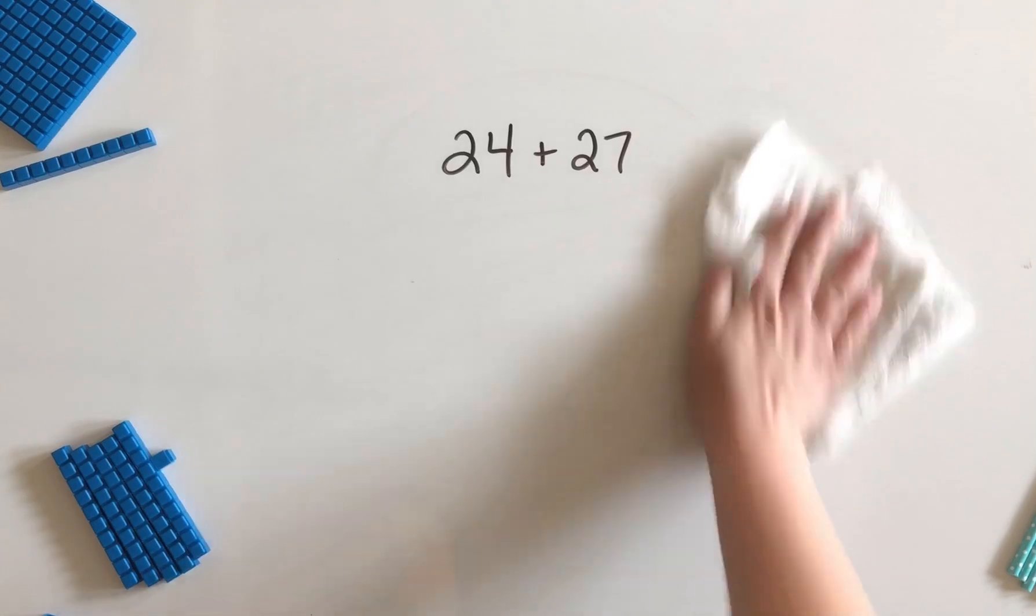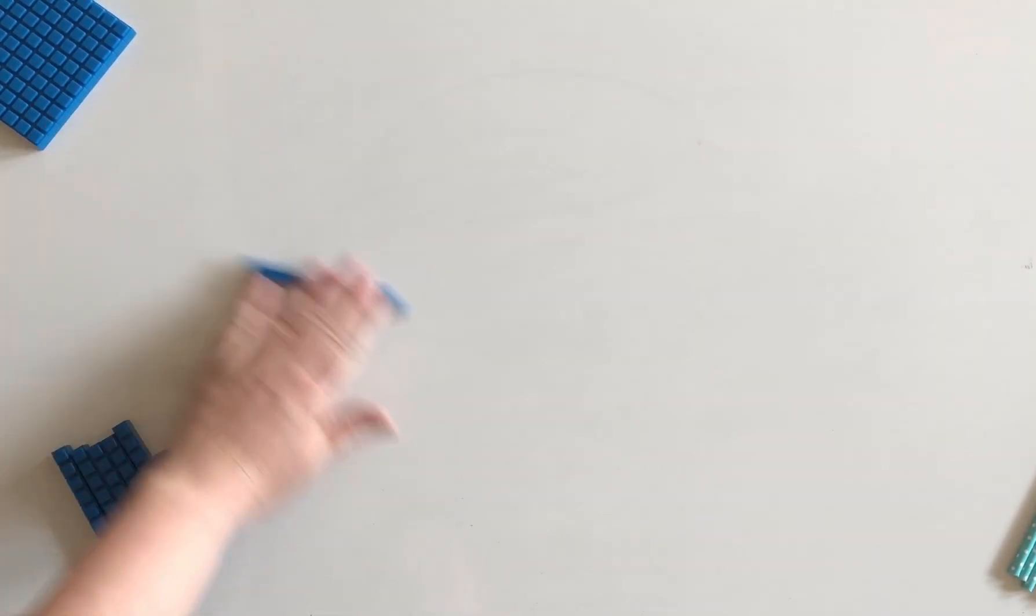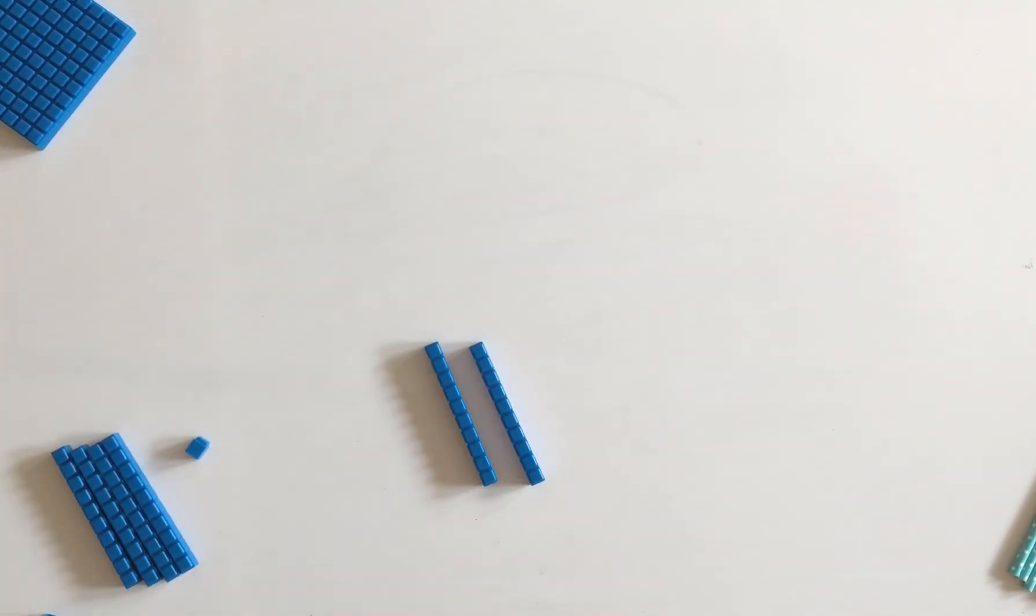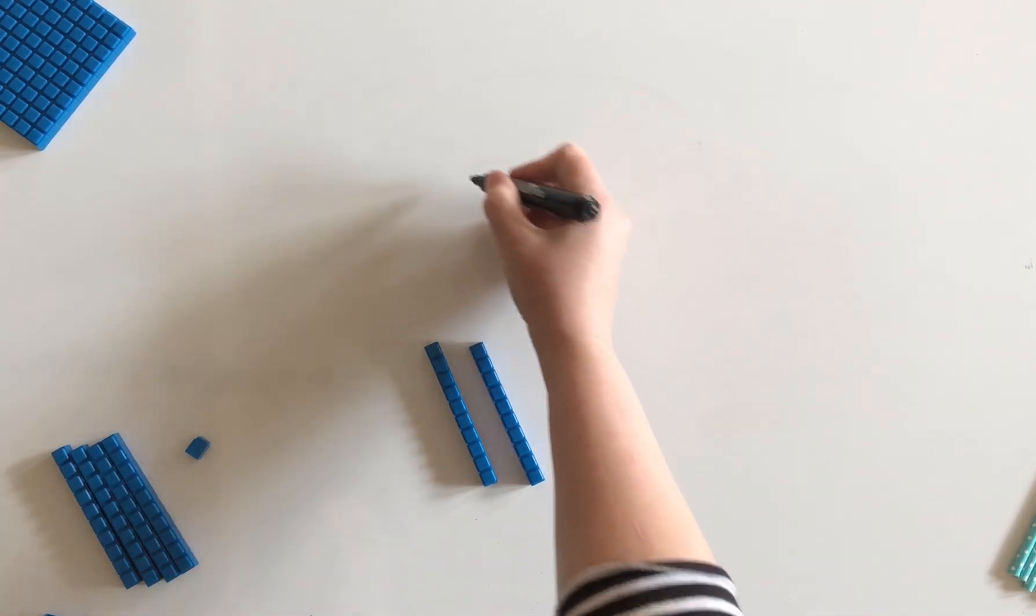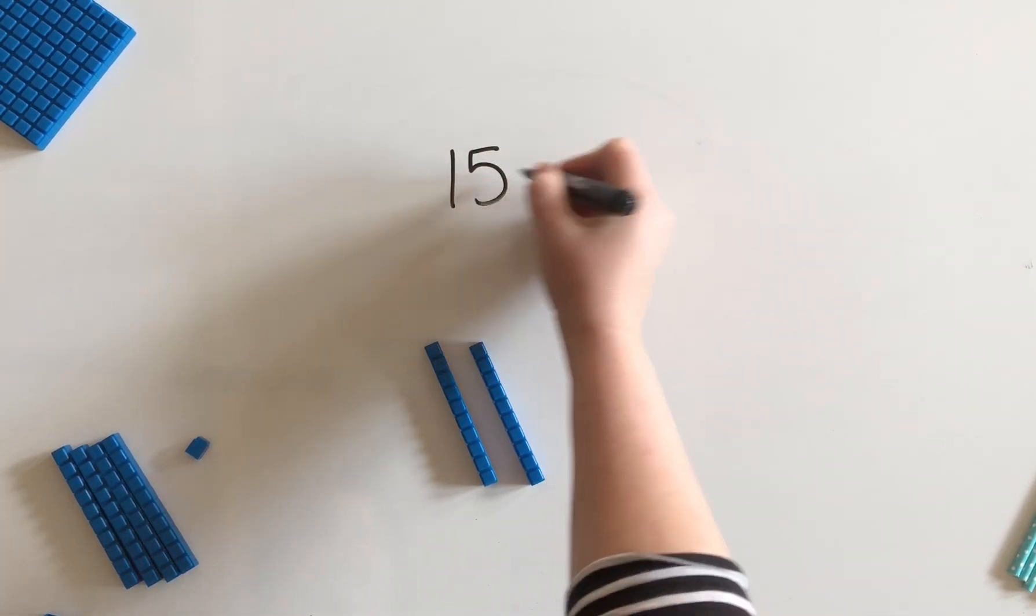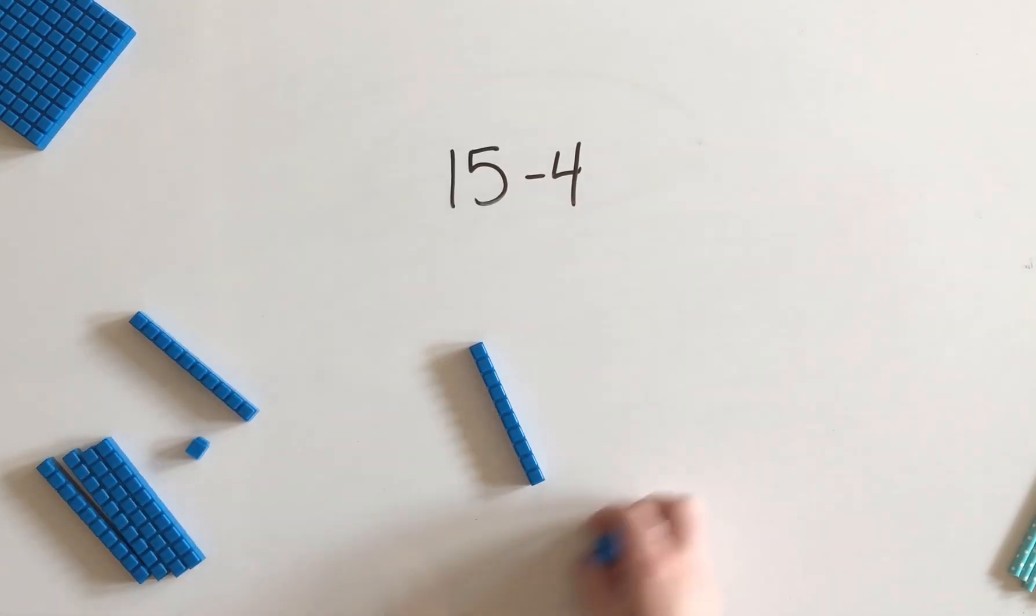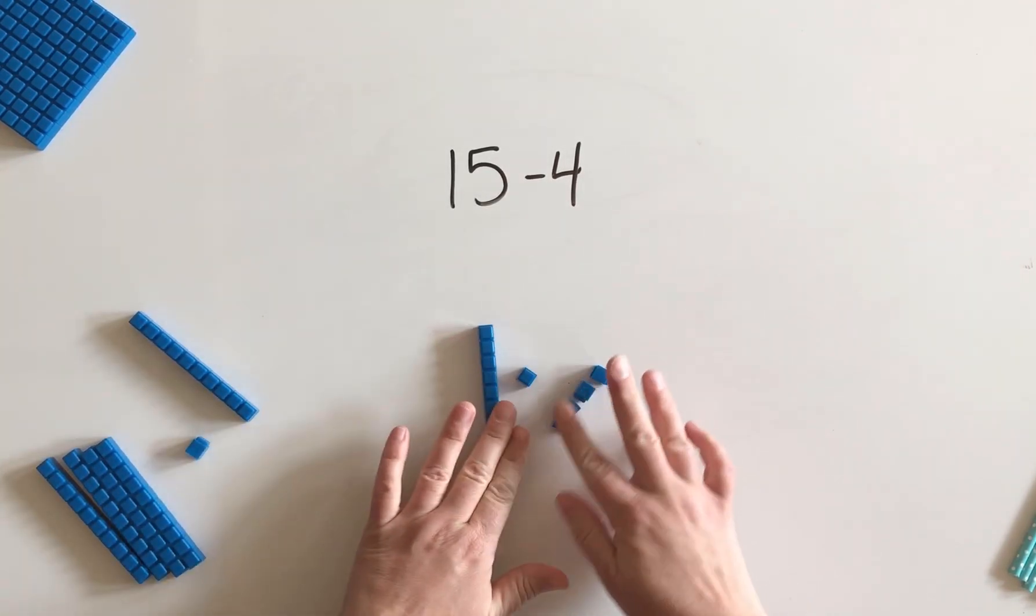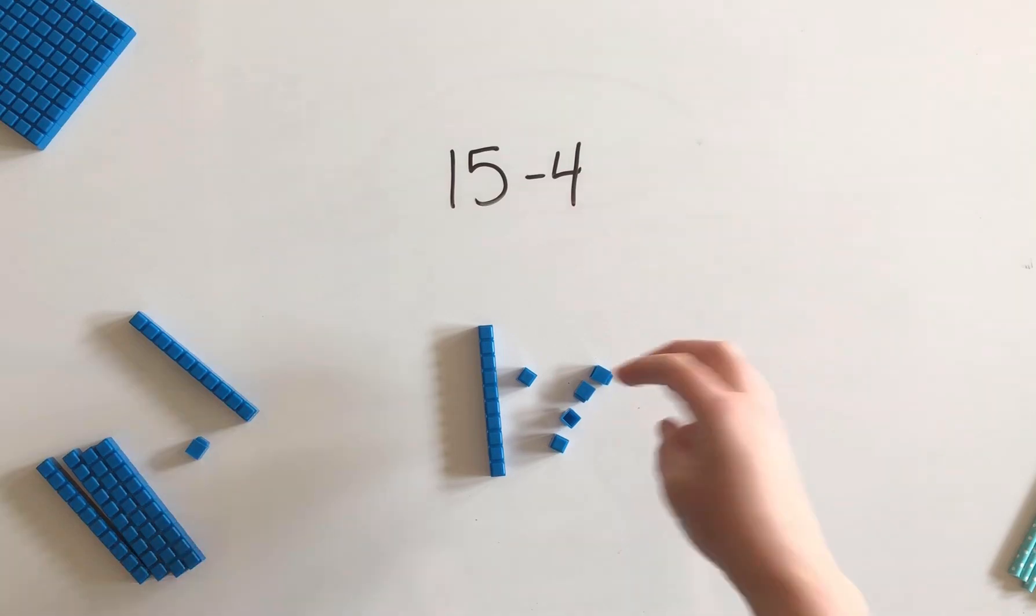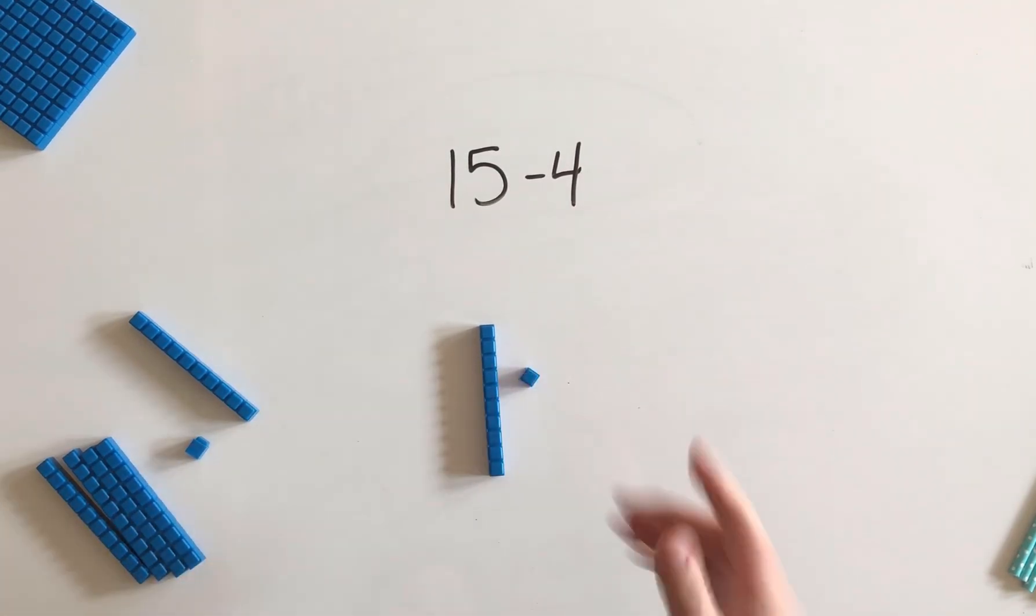Now if we use this for subtraction, base 10s are amazing for subtraction. So if we want to do 15 subtract 4, we are going to start with 15 and then we simply take away 4 and we count what's left - there's 11.